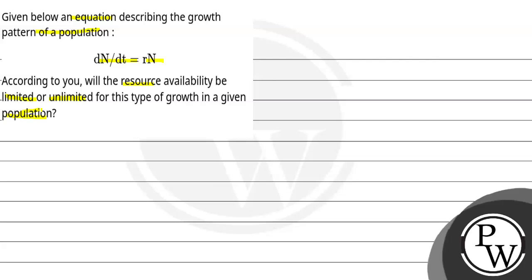We have been given an equation and we need to know which type of growth curve it represents, and whether resource availability will be limited or unlimited for the particular resources. Our key concept here will be population growth curves.